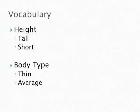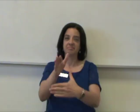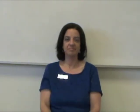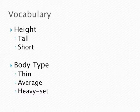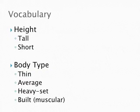Next is body type. There are two signs for thin — watch what my mouth is doing. Next is average, or a normal healthy look. Then heavy set or overweight. And finally built or very muscular.